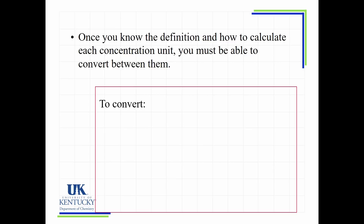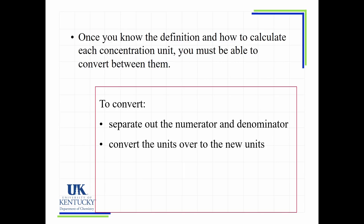To convert between concentration units: first, take the concentration unit given and separate it out as a numerator and a denominator. Second, work with that numerator and denominator as separate things — sometimes it's just dimensional analysis, sometimes you have to stop and add and subtract — getting from the units you have to the units you want. Third, put them back together by dividing the denominator into the numerator to get your new concentration value.